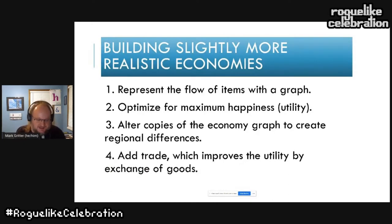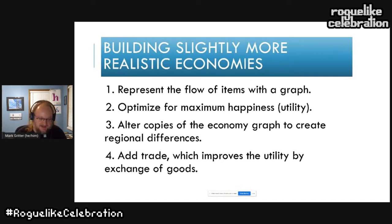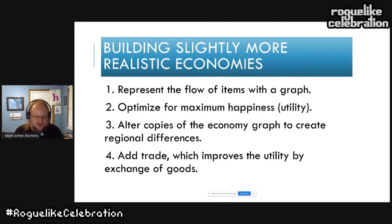I'm going to talk about my experience with a project called Emojiconomy. It builds toy economies through four steps: build a graph that represents a flow of items; apply a utility function with decreasing marginal utility and set the choices in that graph to maximize happiness; create different regions each with a copy of that graph slightly altered to break or specialize each region; and find trade routes between regions that exchange goods and bring the utility back up.